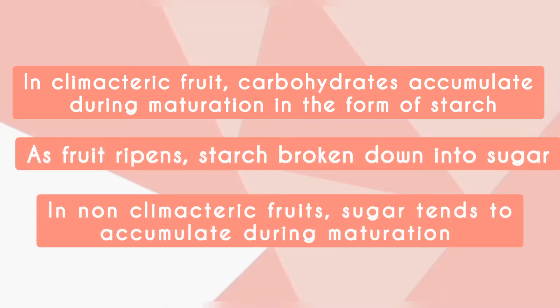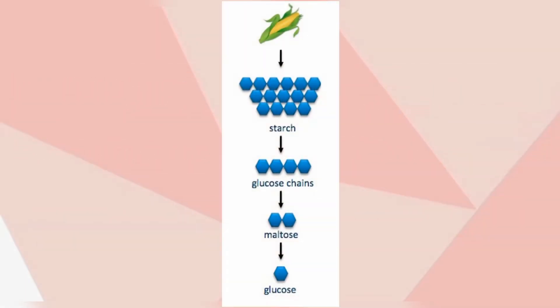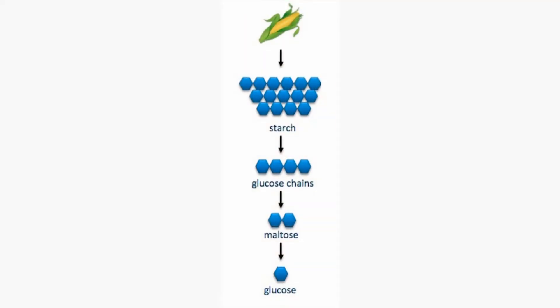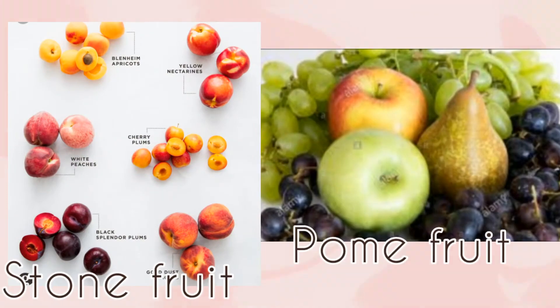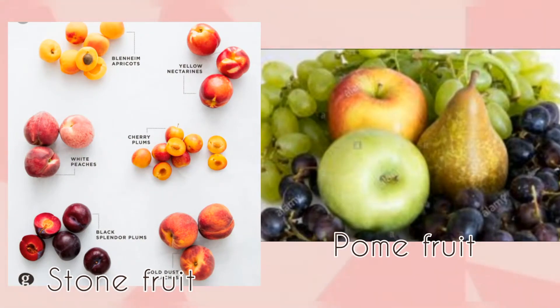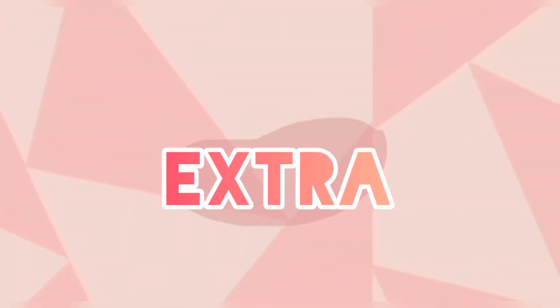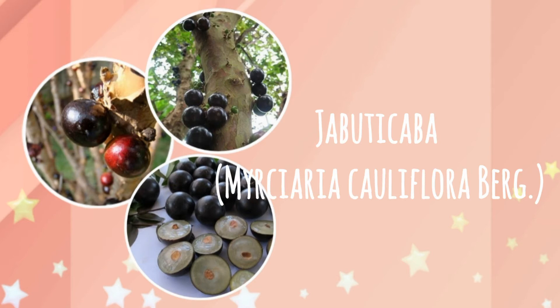Regarding sugar and sweetness: in climacteric fruits, carbohydrates accumulate during maturation in the form of starch. As the fruit ripens, starch is broken down into sugar. In non-climacteric fruits, sugar tends to accumulate during maturation. Examples include stone fruit, palm fruit, and jabuticaba fruit.